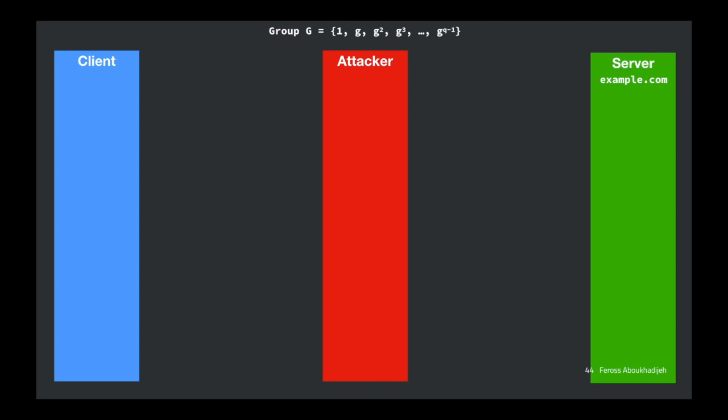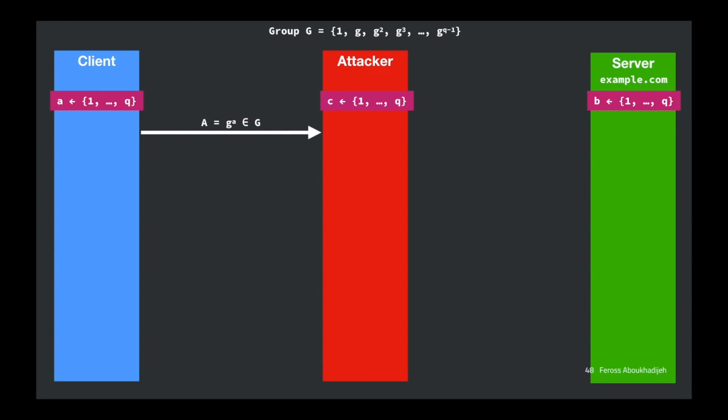Here's a man-in-the-middle attack on anonymous Diffie-Hellman key exchange. We insert an attacker. The client derives A, the server derives B, and the attacker also derives a value C. The attacker doesn't forward the client's message to the real server. Instead it sends back G-to-the-C. Now there's a shared key — DH key one — agreed upon by the client and the attacker. The client has no way to know this happened.